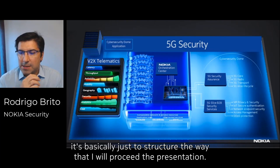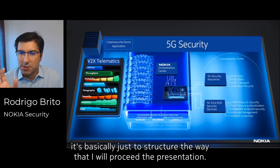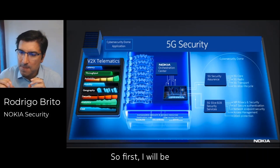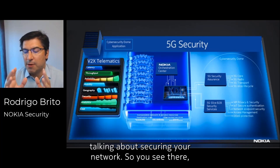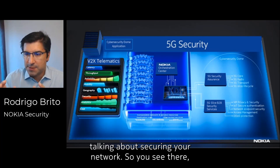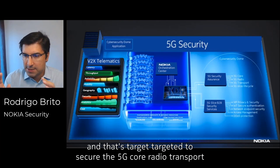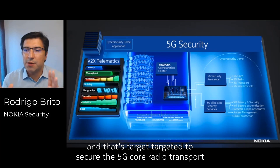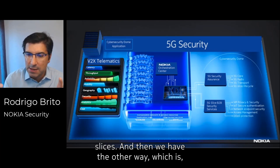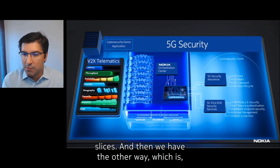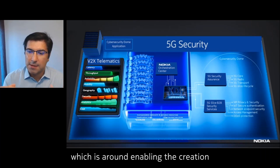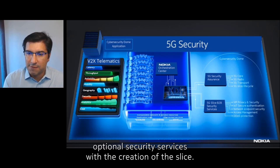This is just to structure the way I will proceed with the presentation. First, I will be talking about securing your network — you see there the 5G security assurance as one of the ways, and that's targeted to secure the 5G core, radio, and transport slices. Then we have the other way, which is around enabling the creation of optional security services with the creation of the slice.